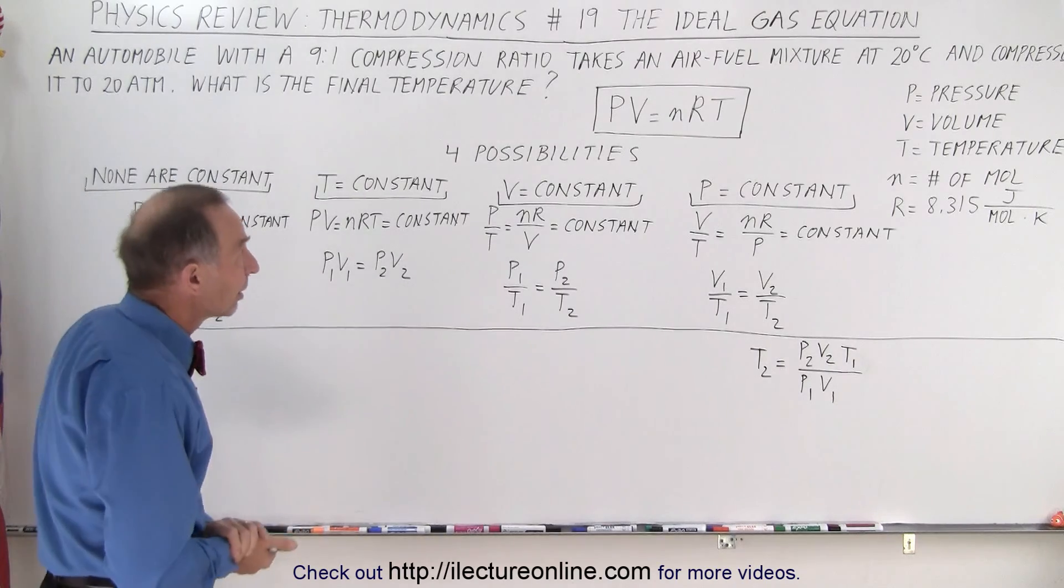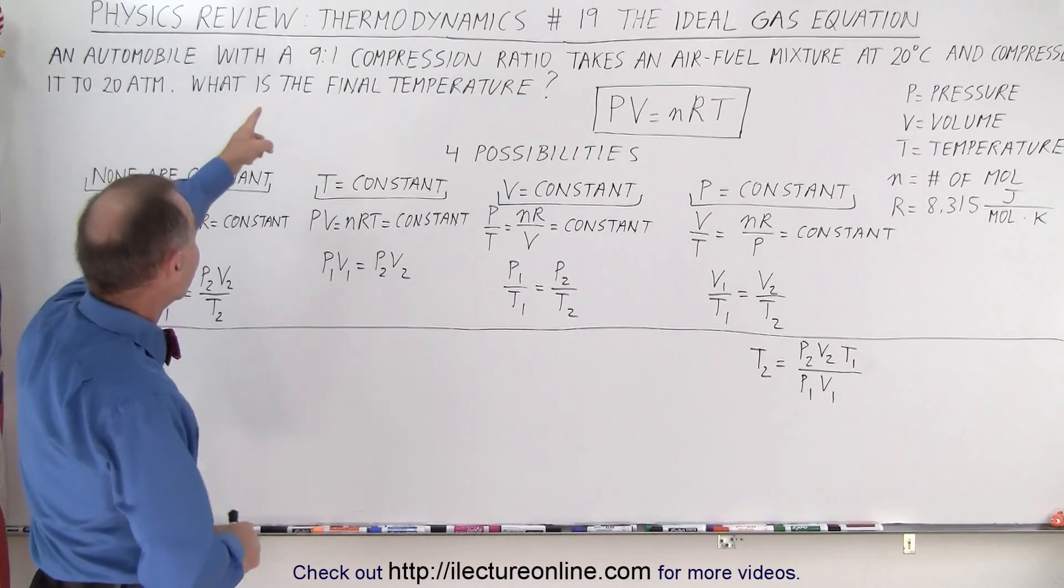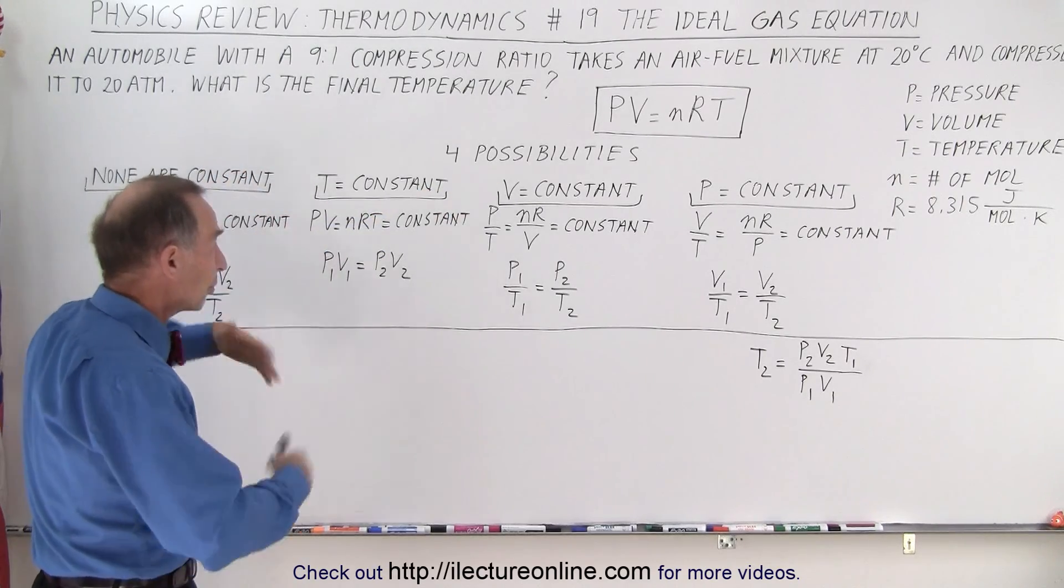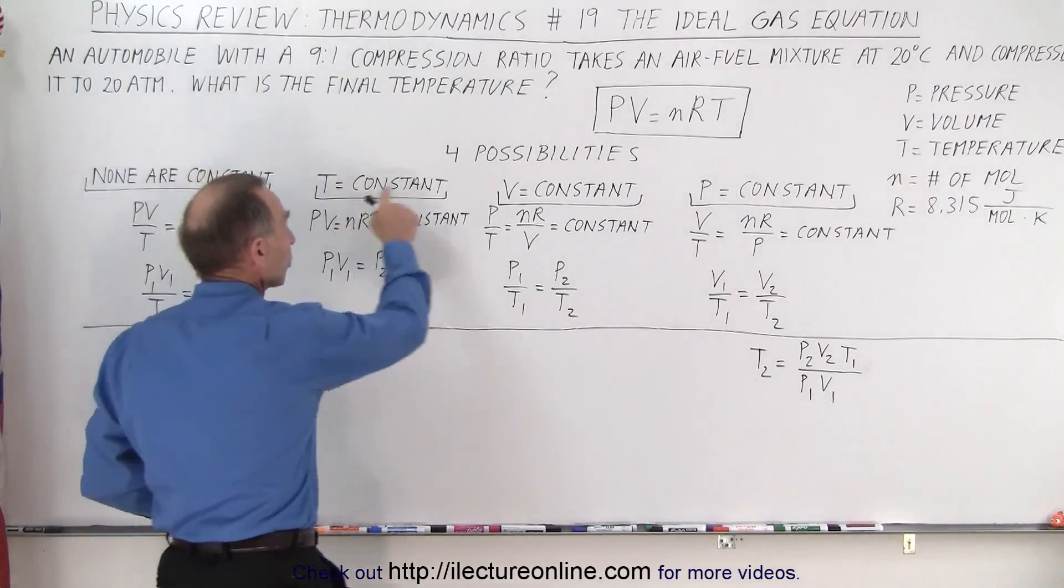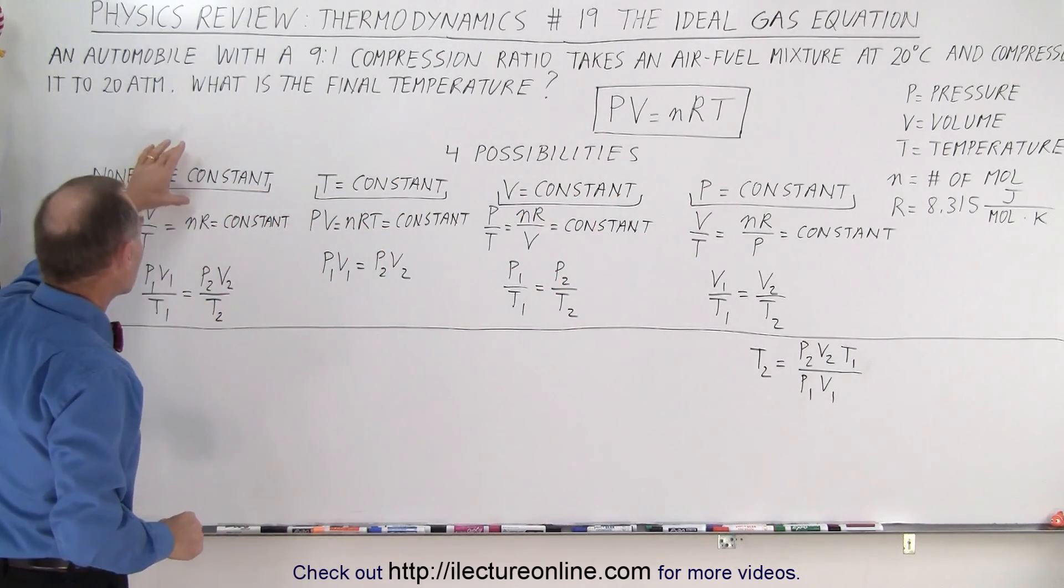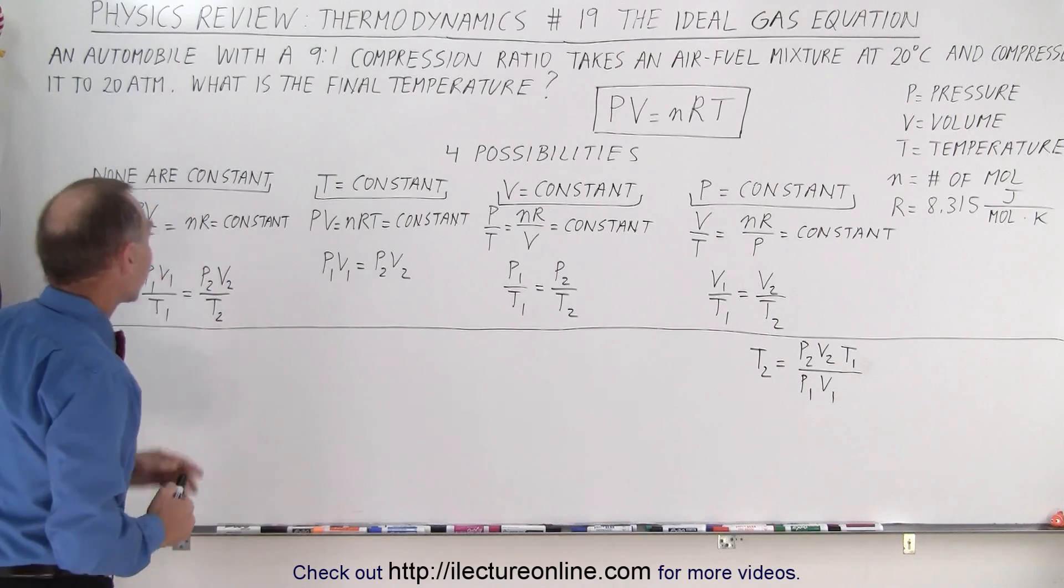Now in this case, we see that the volume is changing, the temperature is changing, and the pressure is changing. So none of the three state variables are remaining constant, which means we need to use this equation where none are constants, which means we move the T over to the left side.